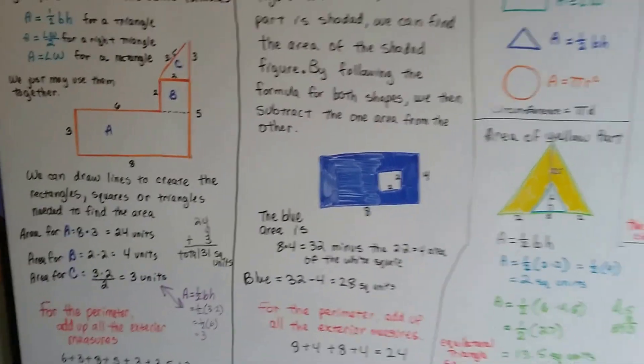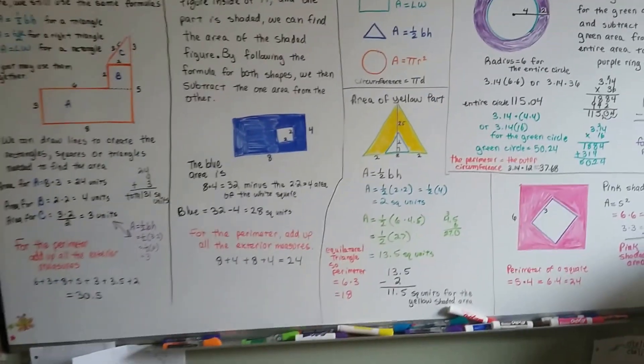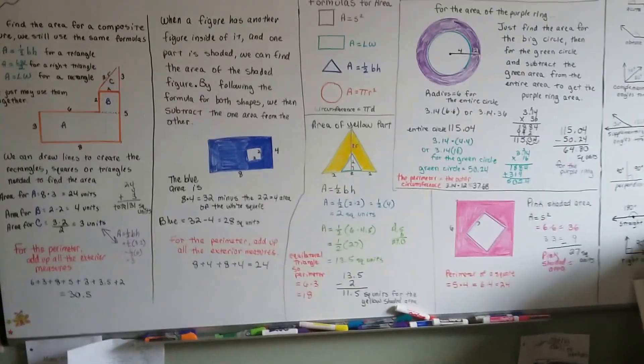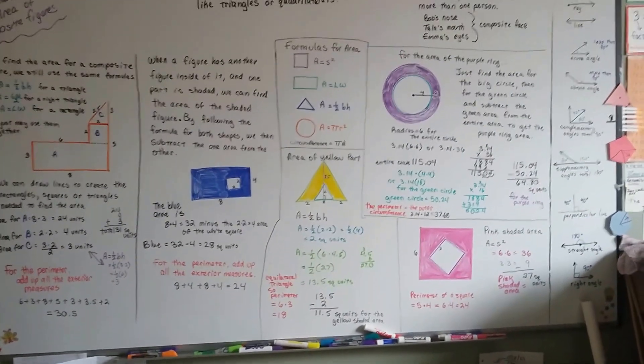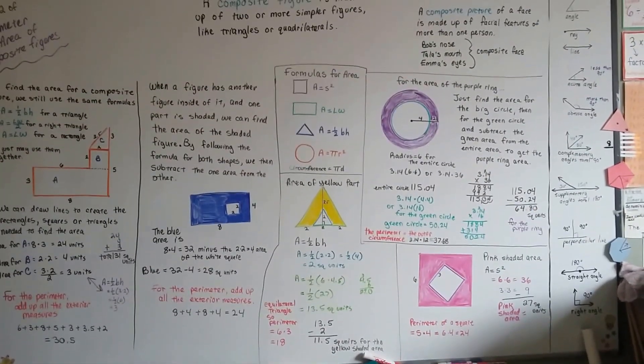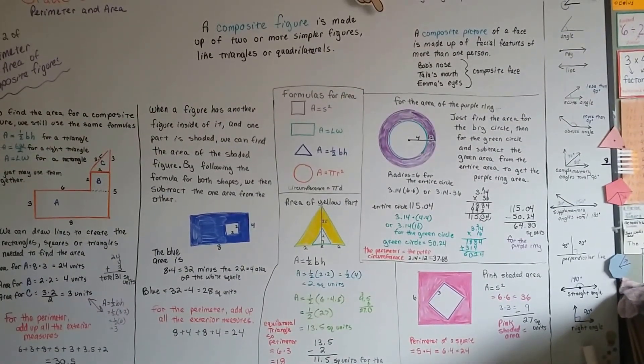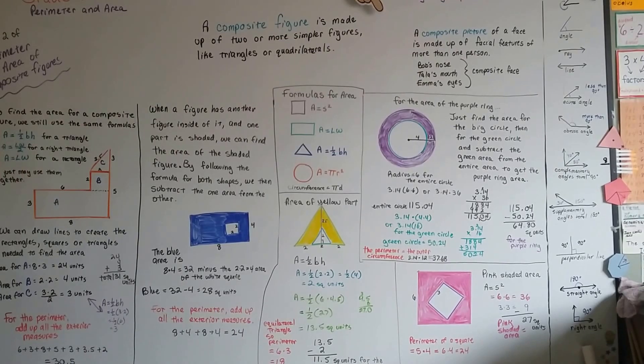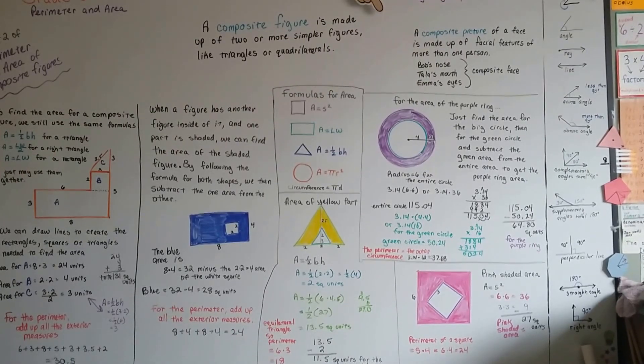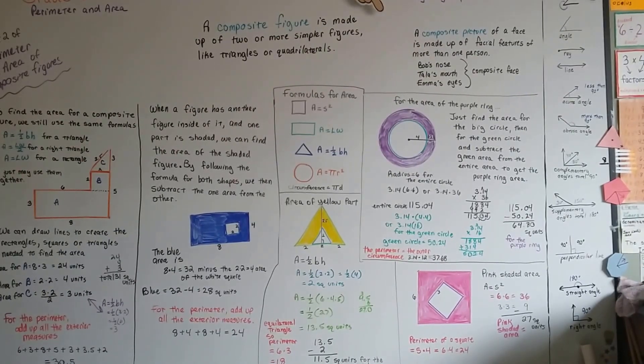So, that is the perimeter and area of composite figures. Just subtract the one measure from the other. You need to find both of the areas, and then subtract the smaller one from the larger one. And, then you've got your area of the shaded part. Very easy. I'll see you next video. Bye!